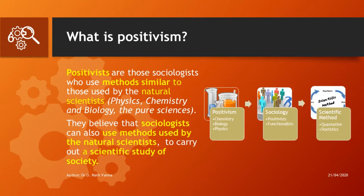What is positivism? Positivism is simply the methods used by the positivists. The positivists are sociologists who use methods similar to those used by the natural scientists to study society. When sociology first started, the aim was to start a science of society, and they felt that the best method would be to use methods similar to the established natural sciences like physics, chemistry, and biology, and adapt them to the study of society.